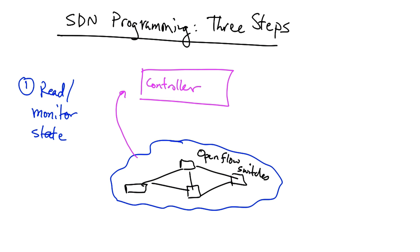The first is that the controller needs to read or monitor network state as well as various events that may be occurring in the network. These events may include failures, topology changes, security events, and so forth.